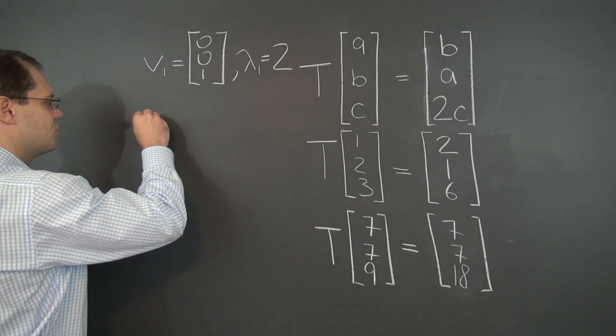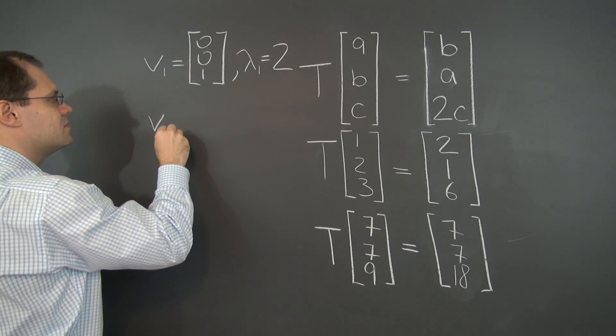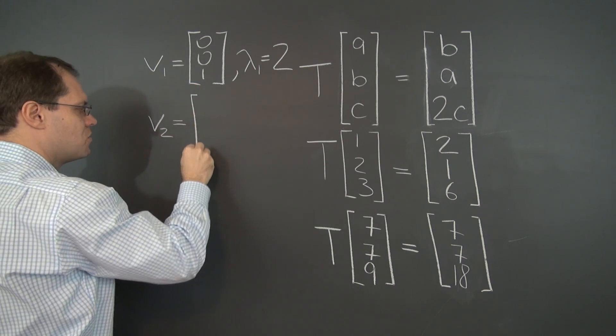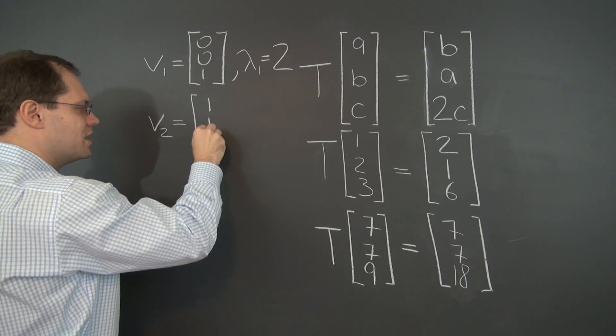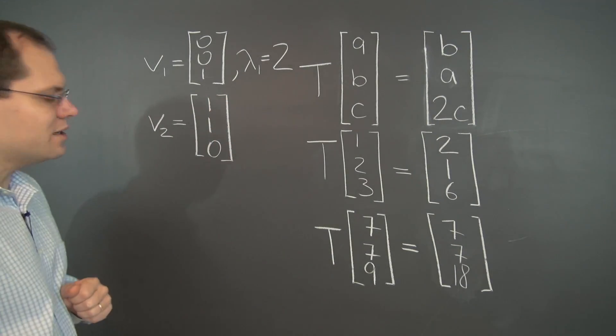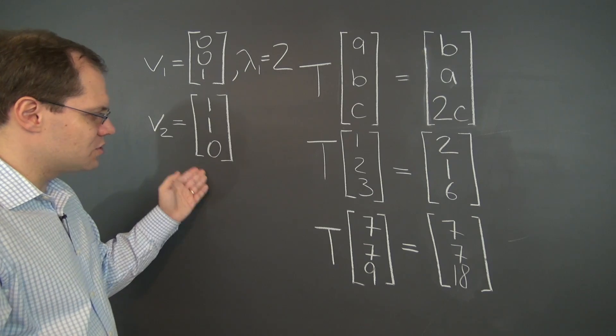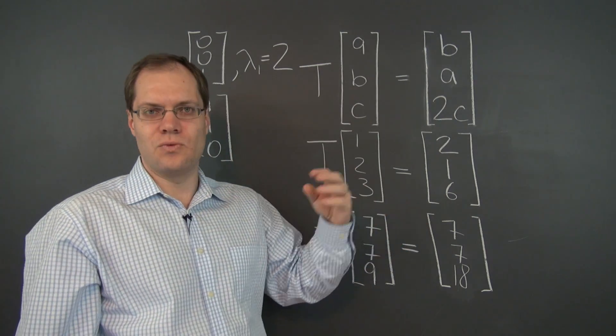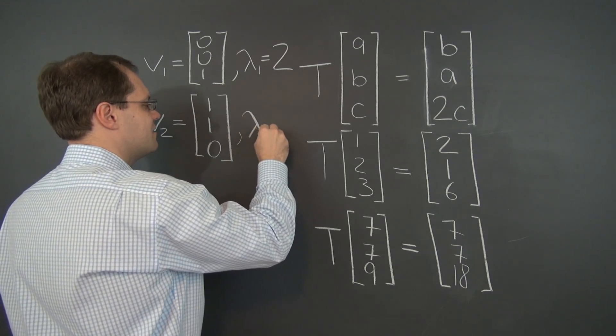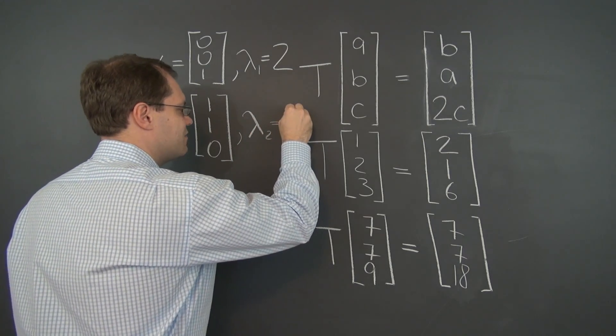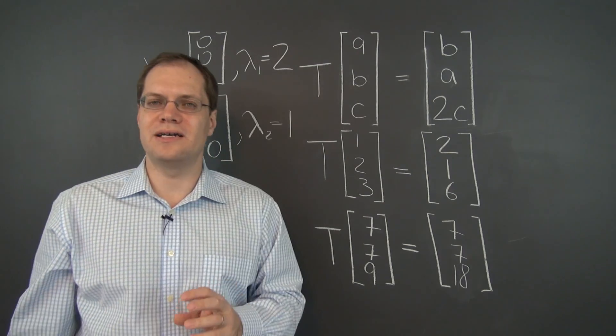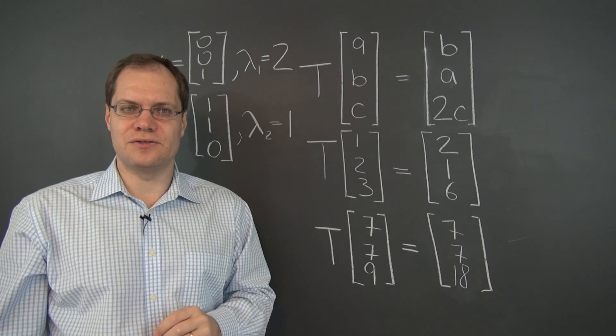So again, we could write down 7, 7, 0. But since we only need to choose one vector that has the same sort of behavior, we'll just choose 1, 1, 0. 1, 1, 0 under this transformation becomes 1, 1, 0. So there you go. It's an eigenvector and the corresponding eigenvalue is 1. So now we have found two eigenvectors and two corresponding eigenvalues.